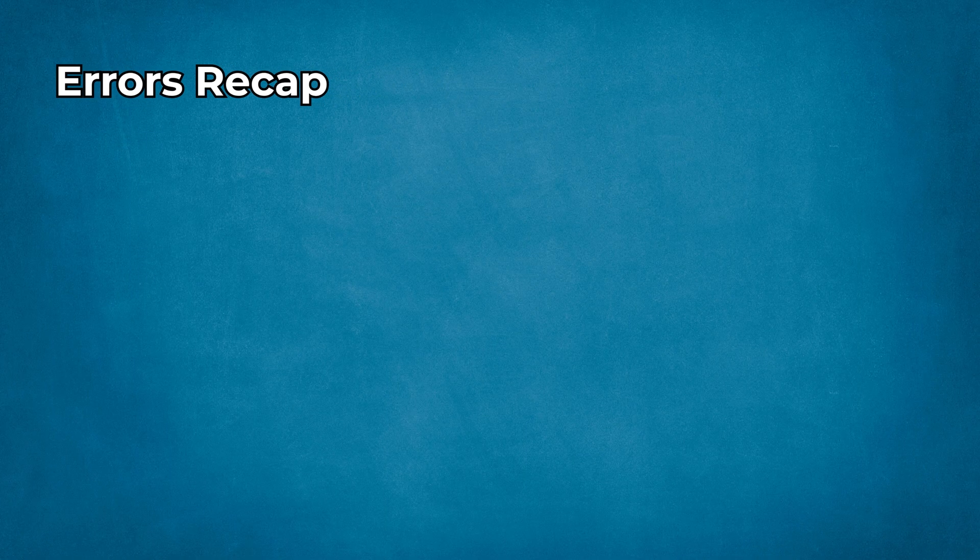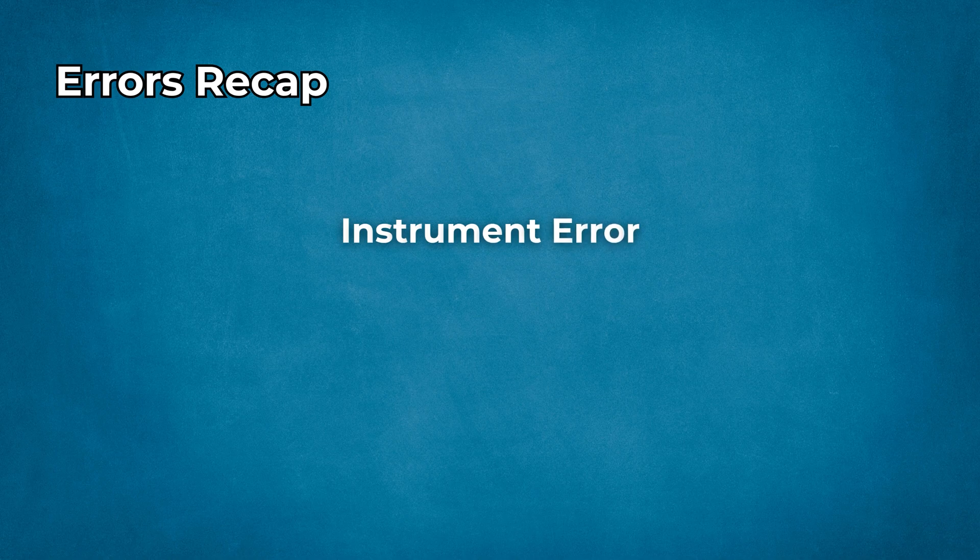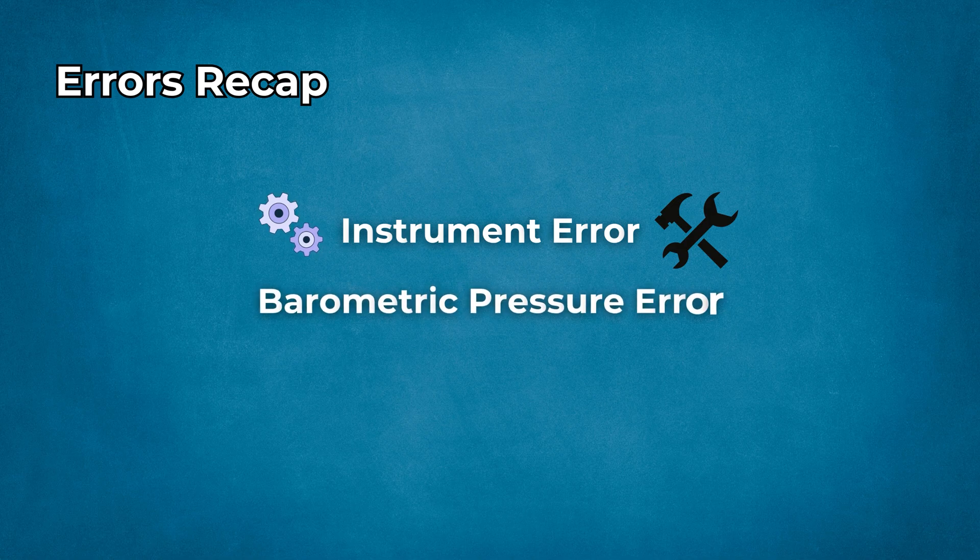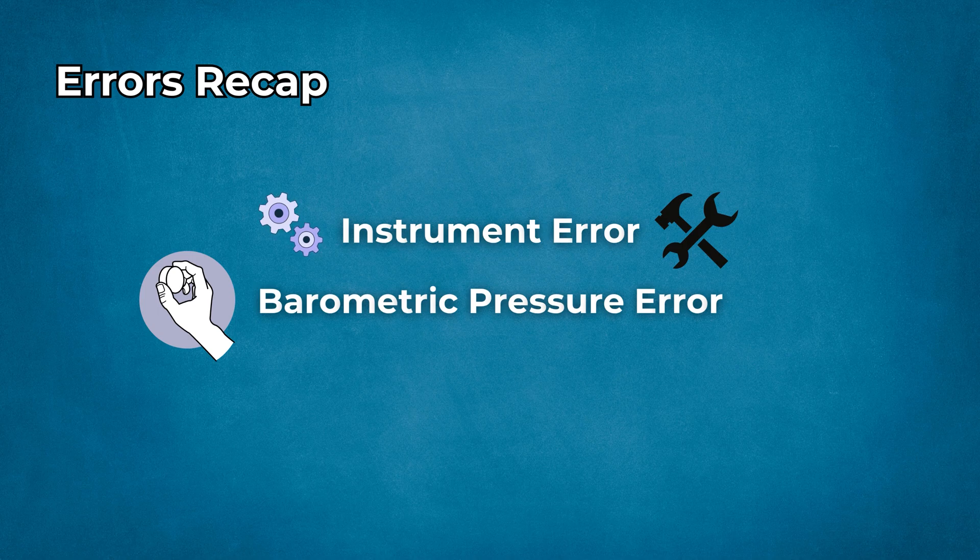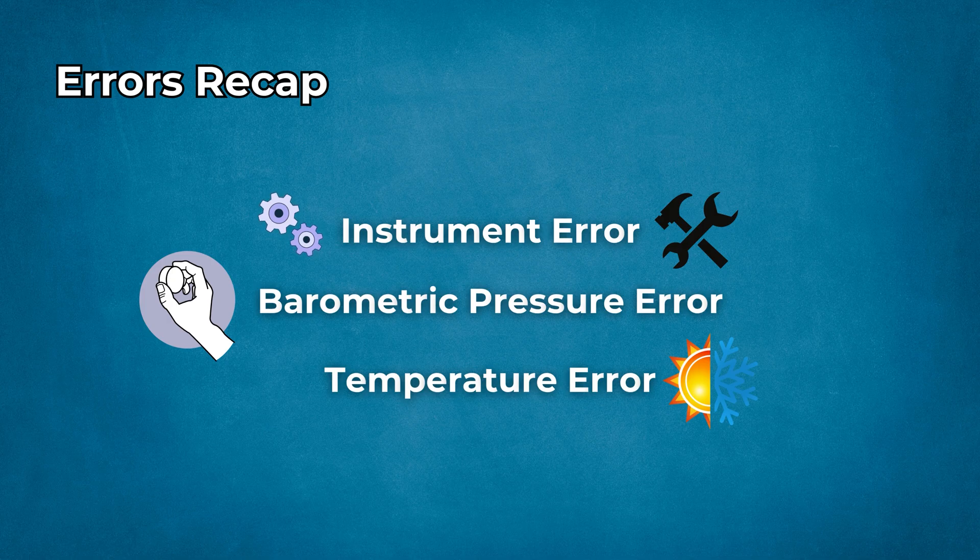Let's recap. Instrument error: mechanical or installation factors, fixed with routine calibration. Barometric pressure error: missed QNH. Always update, especially with changing weather. Temperature error: non-standard air temp. Make cold weather altitude corrections. By understanding and correcting for these three, you ensure your aircraft's altitude displays are reliable and safe.